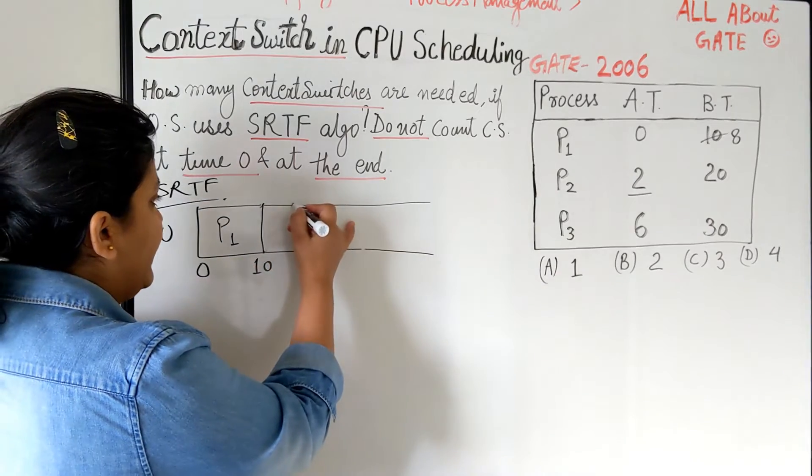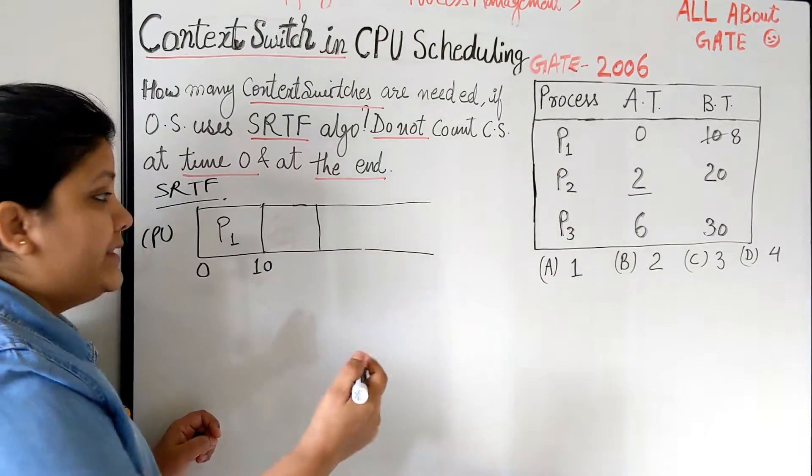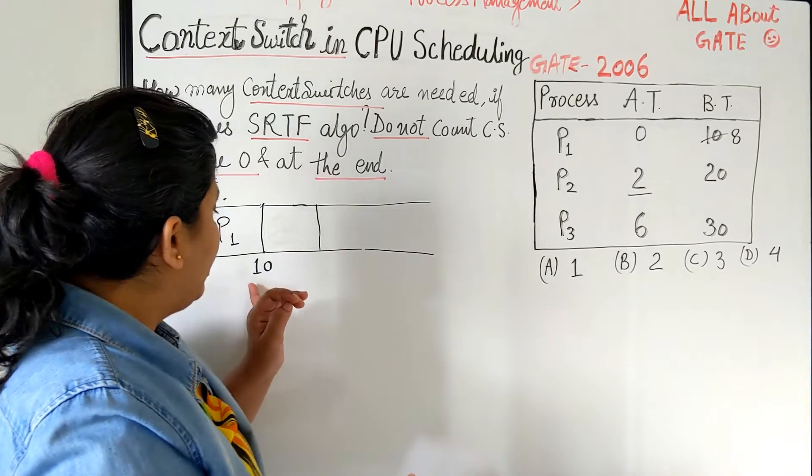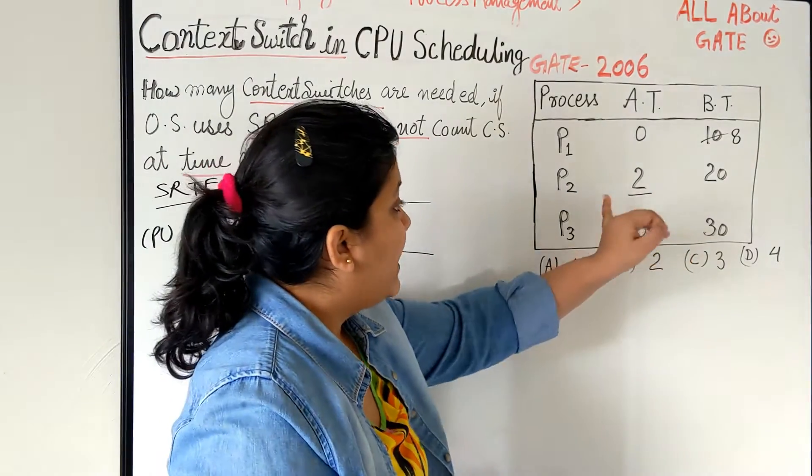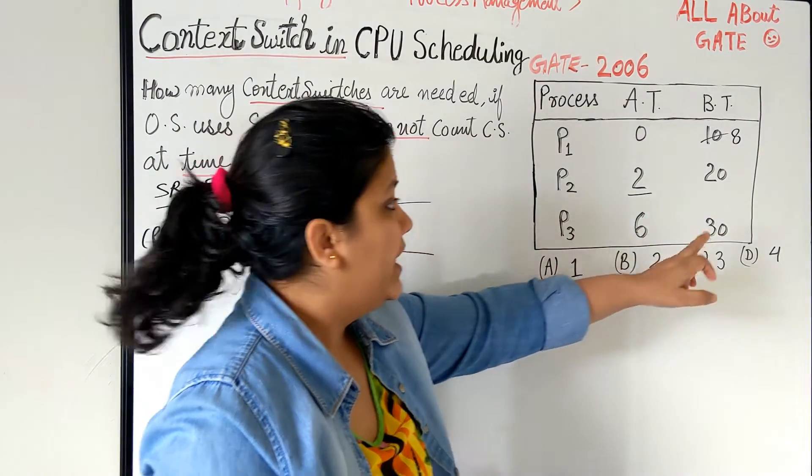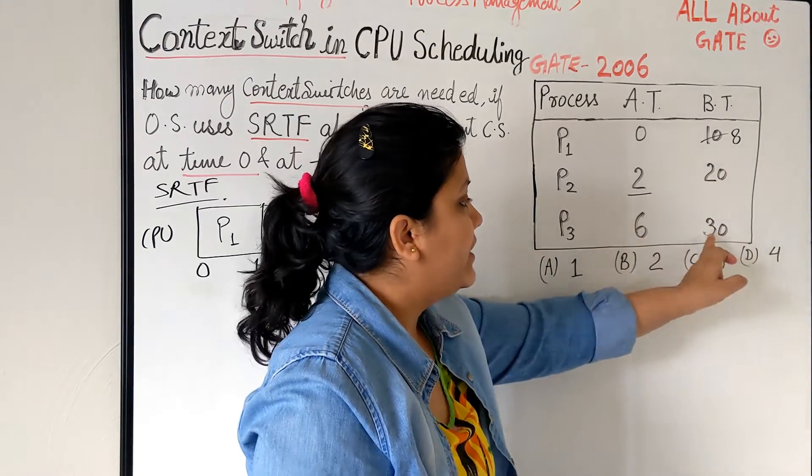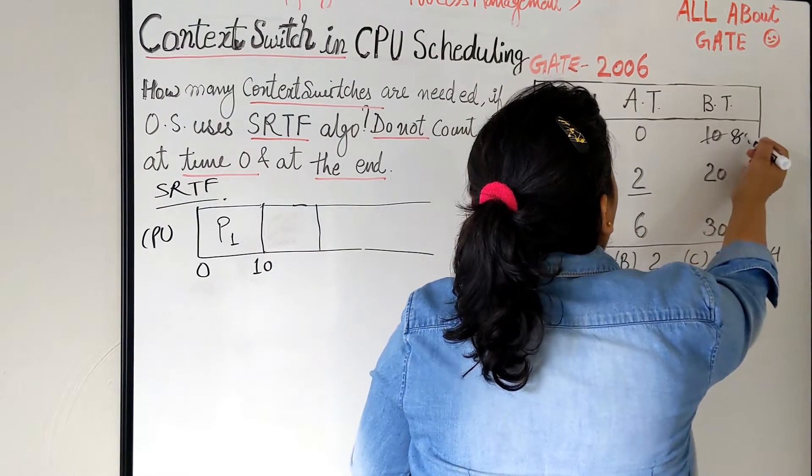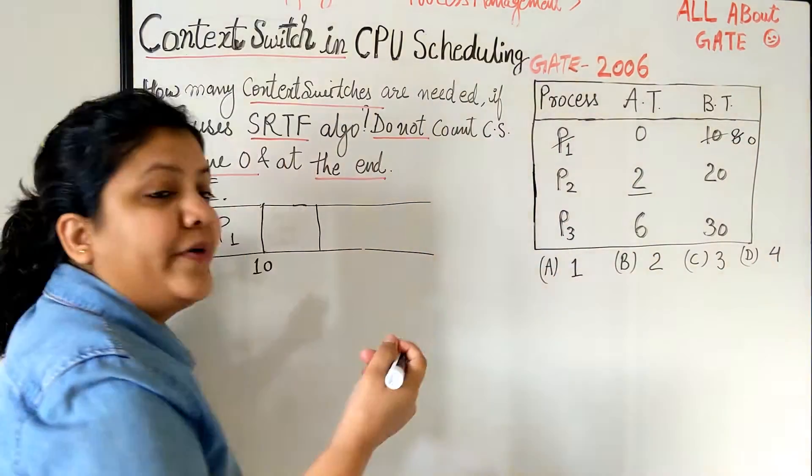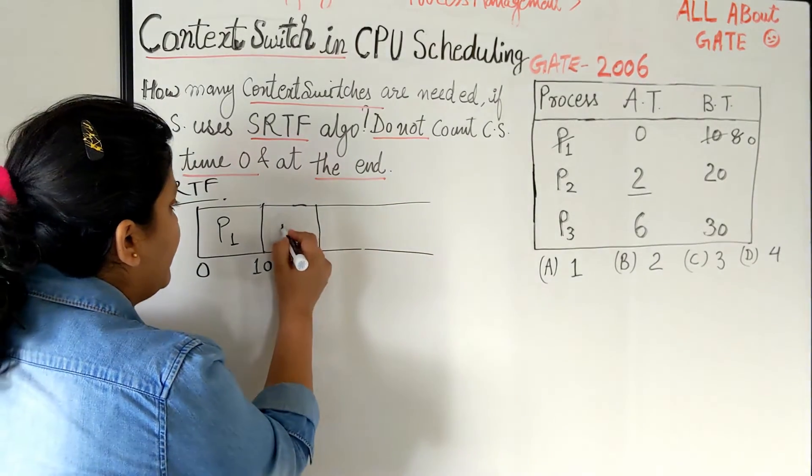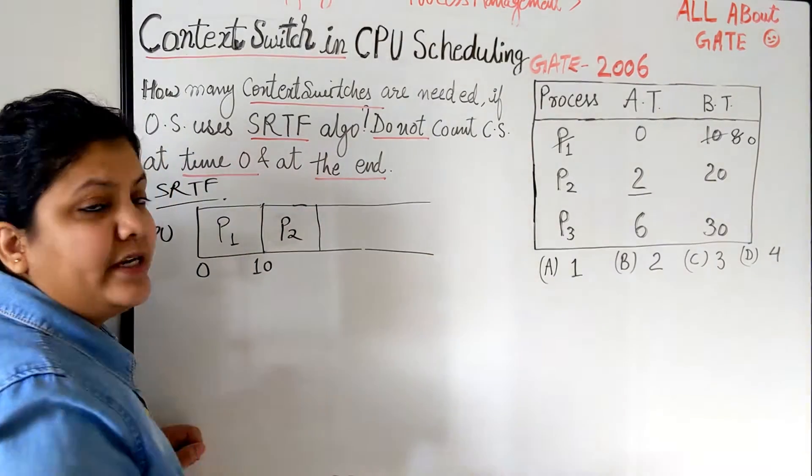Now P1 is running and it got off. Then comes the next process which is smaller. So by time 10 I just have both processes P2 and P3. The times are 20 and 30. So this is done, this is 0. Now out of 20 and 30 which is smaller? P2 is smaller, right? 20 is smaller.